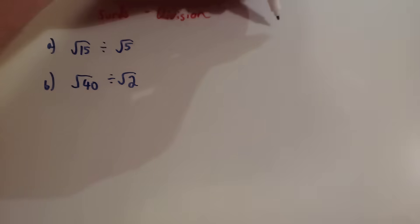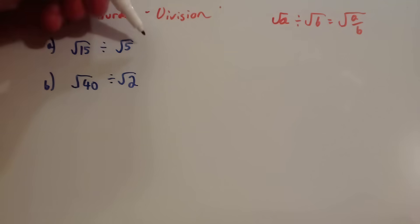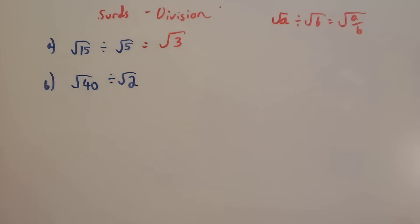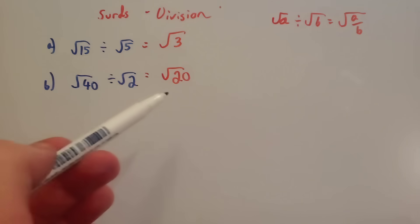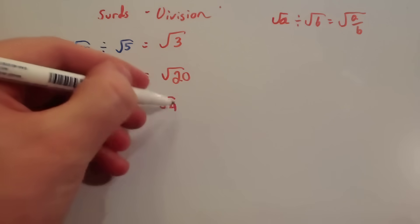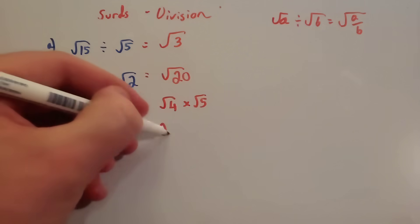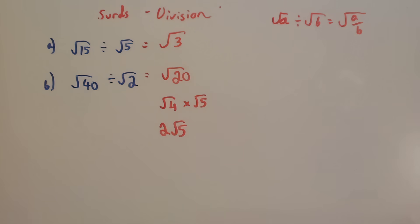Let's look at how to divide surds. Remember, root A divided by root B is equal to root A over B — just divide A by B and write it as a surd. So root 15 divided by root 5: 15 divided by 5 is 3, so root 15 divided by root 5 equals root 3. Now, root 40 divided by root 2: that gives root 20. Let's get into the habit of simplifying — the largest square number that goes into 20 is 4, so root 20 is root 4 times root 5, which is 2 root 5. So root 40 divided by root 2 equals 2 root 5.